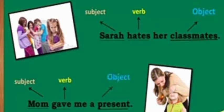Some more examples. Sarah hates her classmates. Here, we know that the subject is Sarah and hate is the verb. Now ask the question: what does Sarah hate? Her classmates. So here, the direct object is her classmates. One more example: Mom gave me a present. Identify the subject — mom. Identify the verb — gave. What did mom give? A present. So here, present is your direct object.